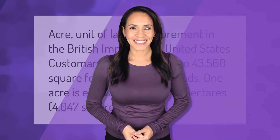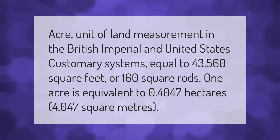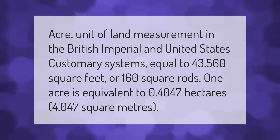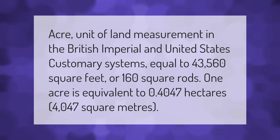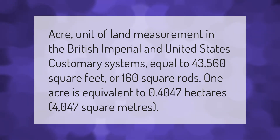An acre is a unit of land measurement in the British Imperial and United States customary systems, equal to 43,560 square feet or 160 square rods. One acre is equivalent to 0.4047 hectares, or 4,047 square meters.